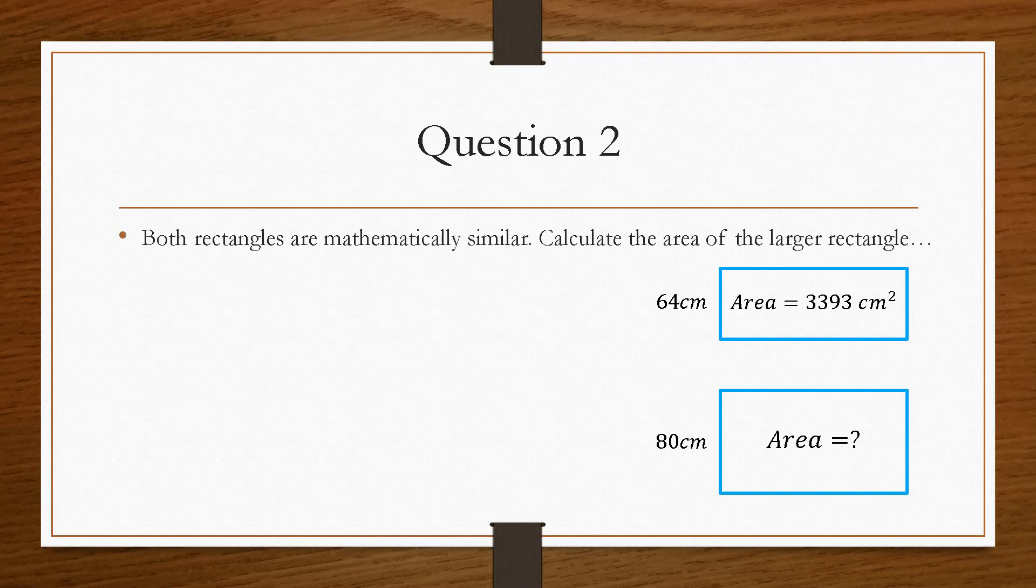And then question number two is both rectangles are mathematically similar, and we need to calculate the area of the larger rectangle. So it's similar as before. We'll label the new, we'll label the old. The new being the larger one, because we have the area that we're trying to find is in the larger section. So linear scale factor is, again, new over old.